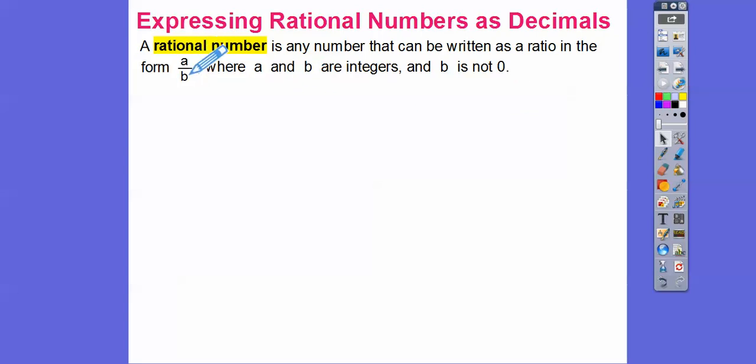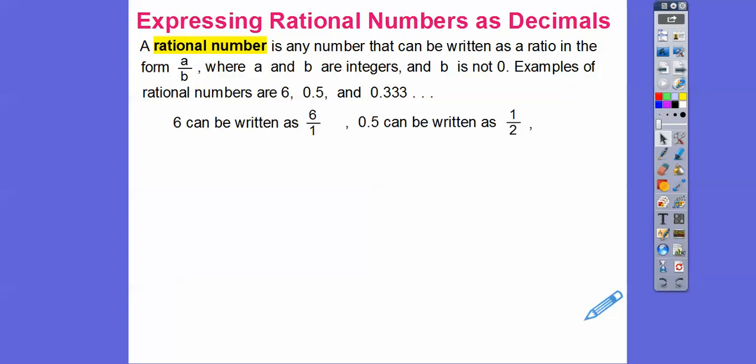This is an integer, this is an integer. They both could be positive, both could be negative, one could be positive, one could be negative. Examples of rational numbers are 6, 0.5, and 0.33333 because 6 is the same as 6 over 1. So see how these are both integers now. What fraction is 0.5? That's 1 half. And 0.333333 goes on forever, it's 1 third.